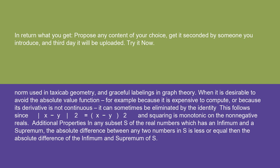When it is desirable to avoid the absolute value function, for example, because it is expensive to compute or because its derivative is not continuous, it can sometimes be eliminated by the identity. This follows since |x - y|² = (x - y)², and squaring is monotonic on the non-negative reals.